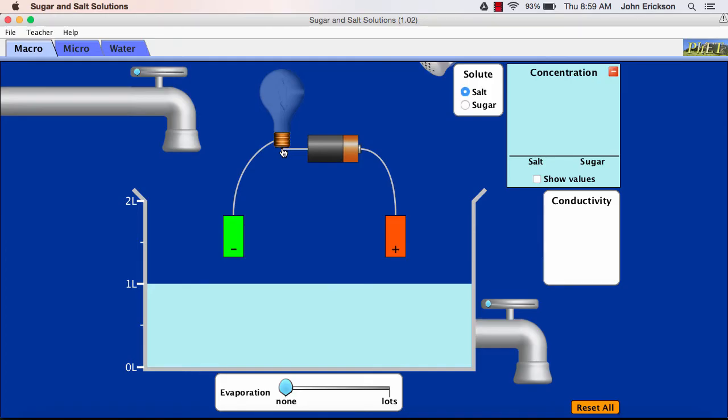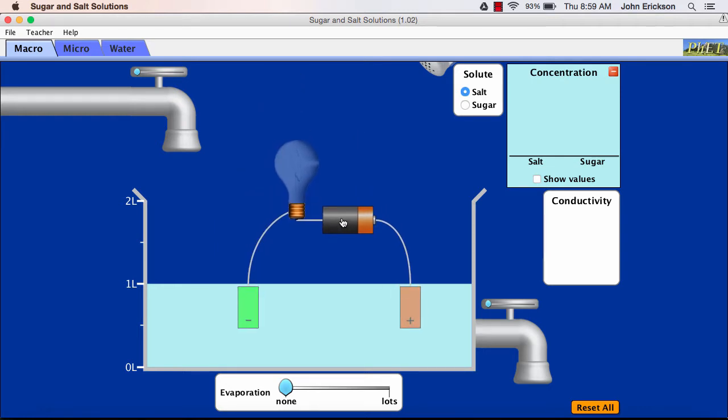So now we'll check the conductivity of some different substances, beginning with pure water. Do you expect this to be an electrolyte? Should the light go on? No, pure water is not a conductor.